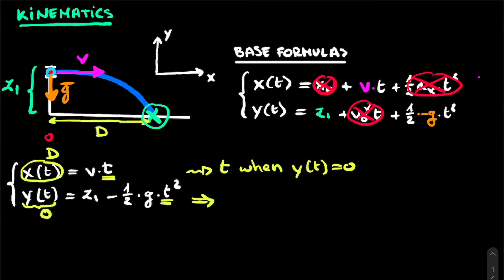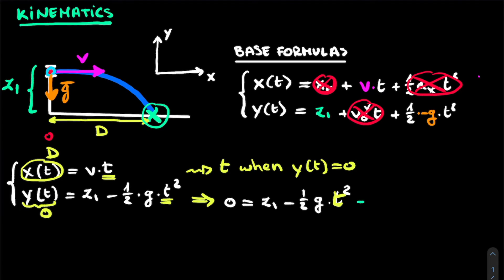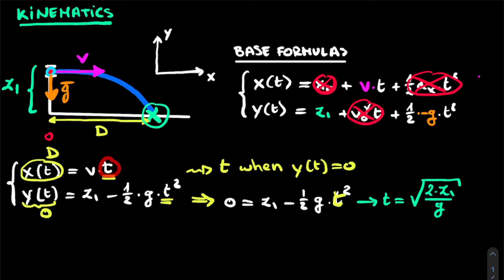We substitute this time t into the x equation to find D. Filling in t = sqrt(2z1/g) into x(t) = v·t gives: D = v · sqrt(2z1 / g). Now we can substitute the expression for v found earlier — the square root of 2g(z2 − z1) — into this formula.